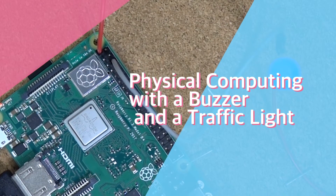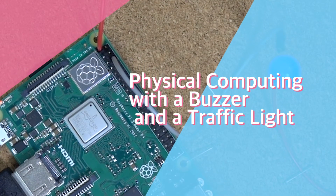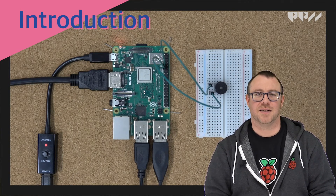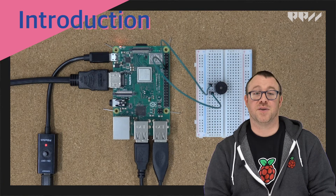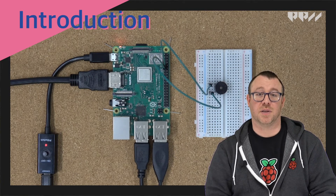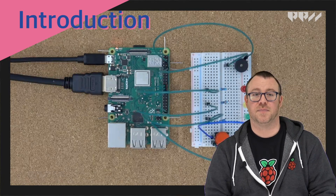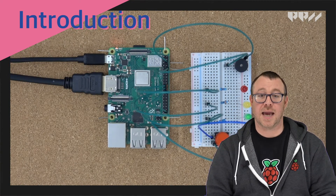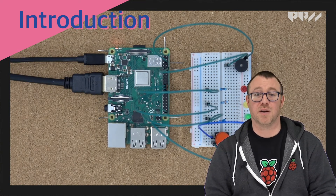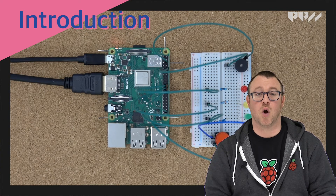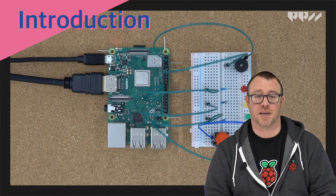Visible computing with a buzzer and a traffic light. We have created a button and light program, so let's add a bit of noise to the project. The buzzer is another simple component that can work very similarly to the LED and button. We will be able to wire up the buzzer and connect an LED and button to create our own traffic light. These components have so many different applications in different projects.